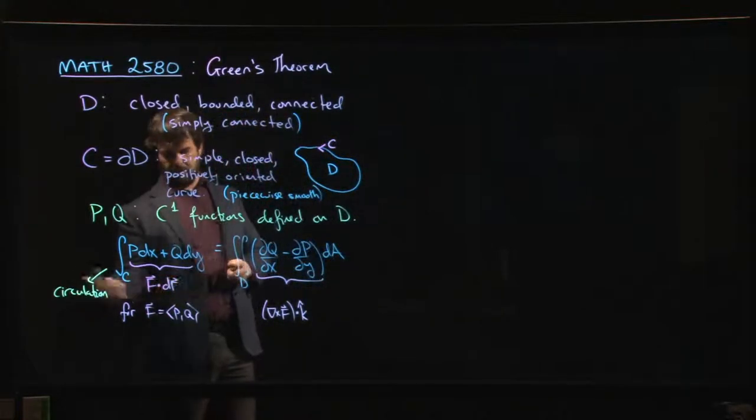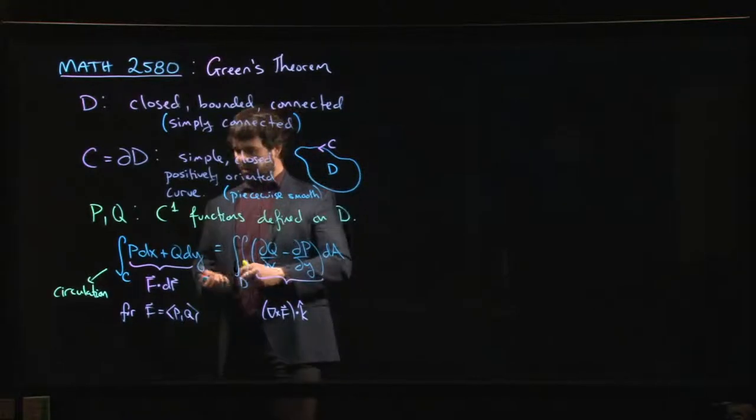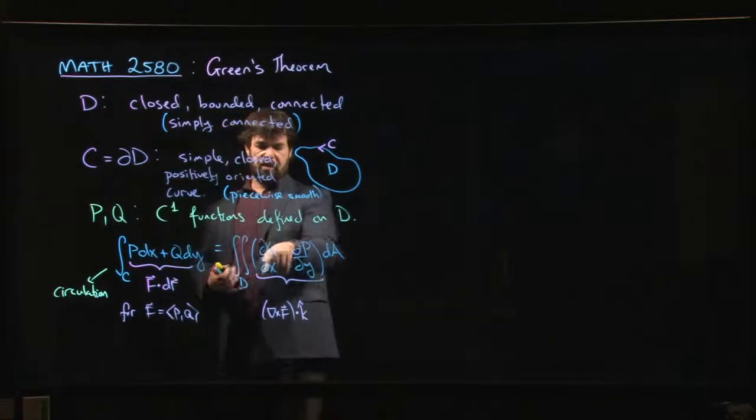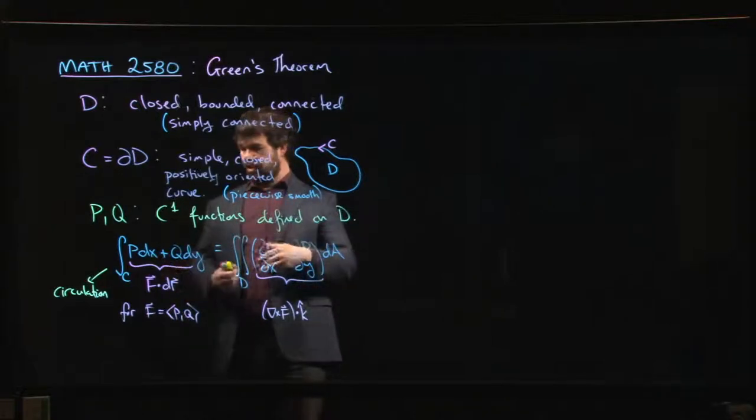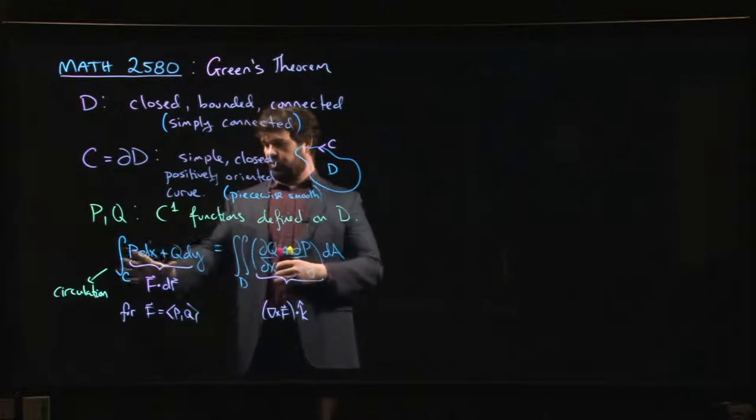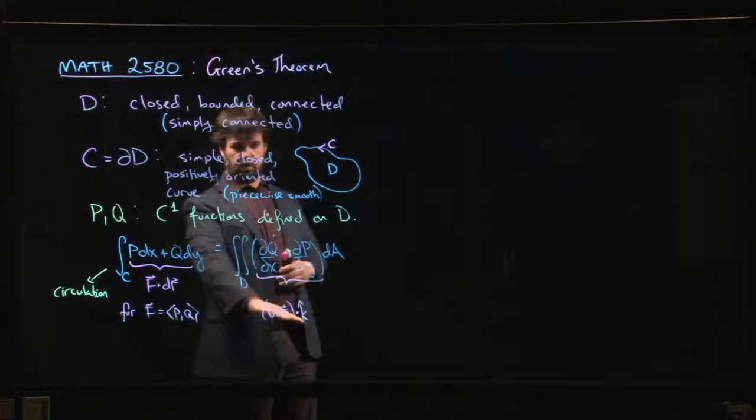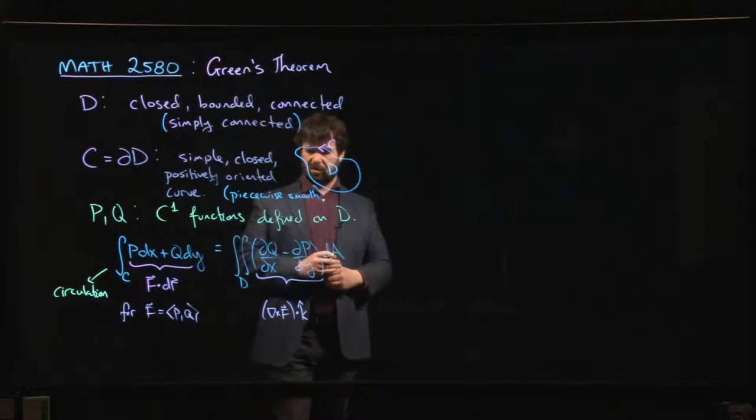You could also compute flux across the curve. Instead of dotting with the unit tangent vector, you could dot with the unit normal vector, the outward pointing unit normal. If you do that, if you compute flux instead of flow over here, then what you get is dP/dx plus dQ/dy. You get the divergence on this side. This kind of flow connects with curl, circulation connects with curl, flux with divergence.